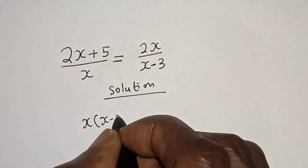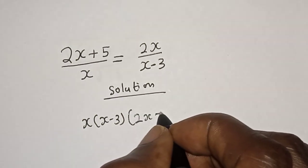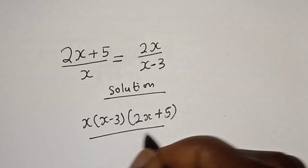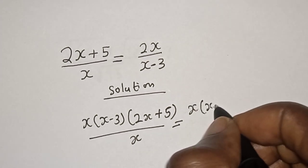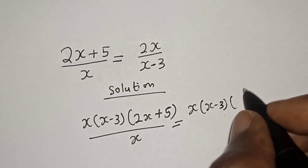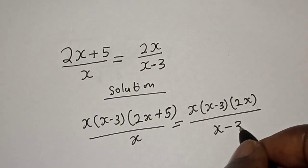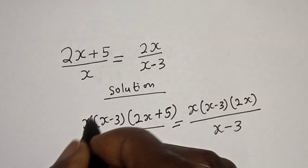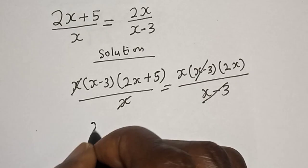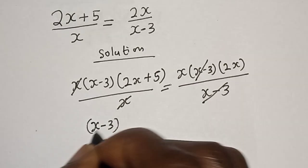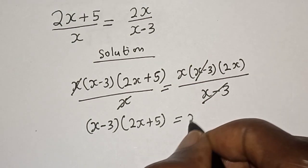So that is s bracket s minus 3, which is the LCM, multiplied by 2s plus 5 over s, is equal to s bracket s minus 3 multiplied by 2x over s minus 3. The s terms cancel, and the s minus 3 terms cancel, giving us x minus 3 bracket 2s plus 5 is equal to s bracket 2x.